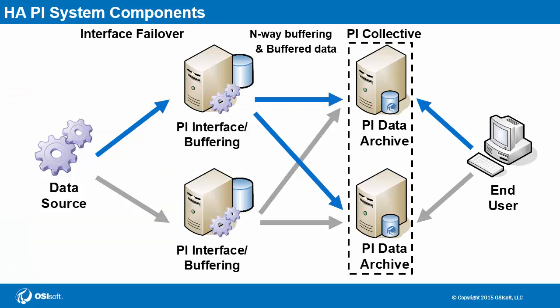There will be two PI interface instances in failover, allowing for redundant data collectors. Each PI interface node will also have the PI buffer subsystem enabled, not only for its n-way buffering, but also to buffer data in case one of the PI collective members goes down. The PI data archives will form a PI collective, creating redundancy for data access. And lastly, end users will be using PI client applications built on the PI SDK, which actively seeks to connect to available PI collective members.